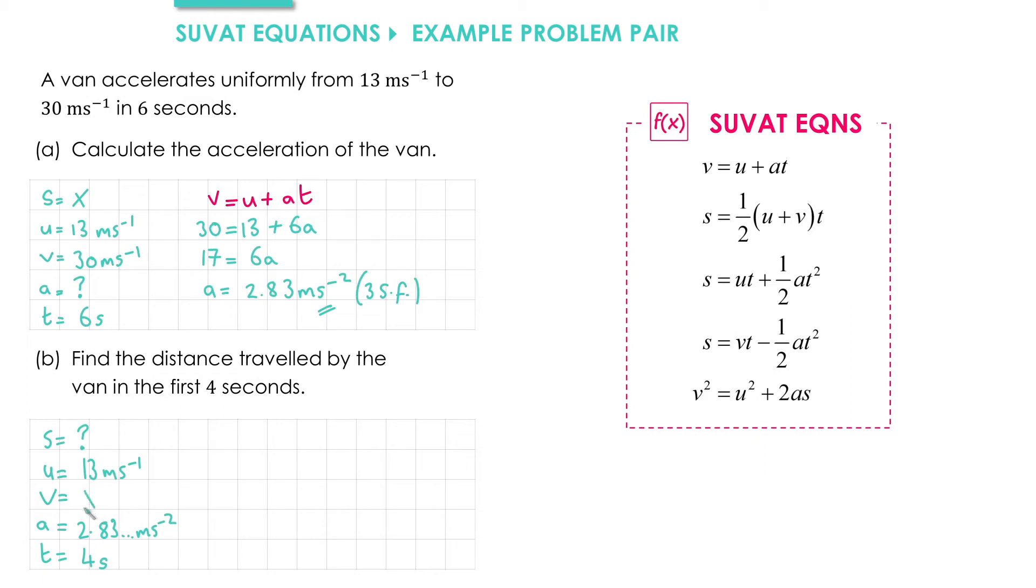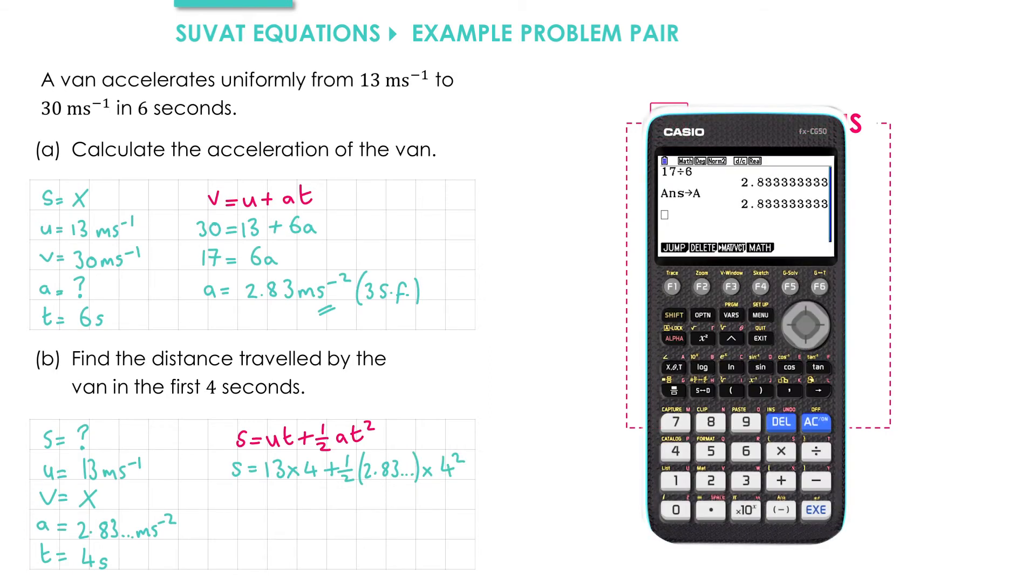We're not interested in finding V, so we put a cross next to that. We want to find S and we've got U, A, and T. Looking at the formulas, we want to use S equals UT plus half AT squared. Once again, I'll write down the formula—there's no marks for this, but it may help us when substituting in. S we don't know, so we'll leave that as S. U is 13, so we get 13 times T, which is 4, plus a half times A times T squared, which is a half times 2.83 times 4 squared.